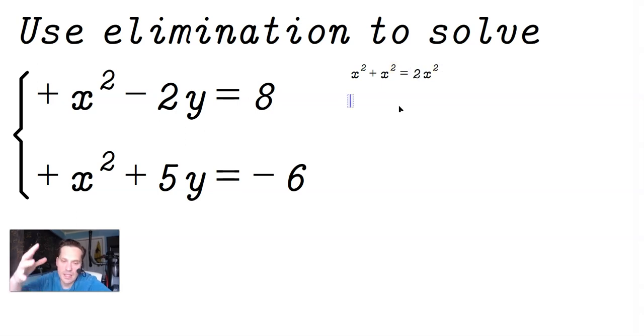In other words, if you just added the equations directly, corresponding terms, you would have 2x squared and then negative 2y plus 5y is a positive 3y, and then 8 plus negative 6 essentially would give you a positive 2. So this is not useful because this contains still x and y, so no progress.